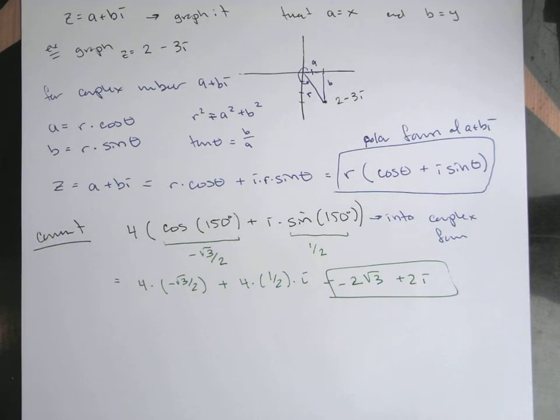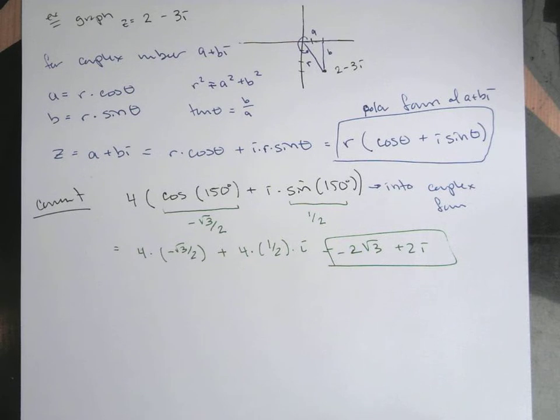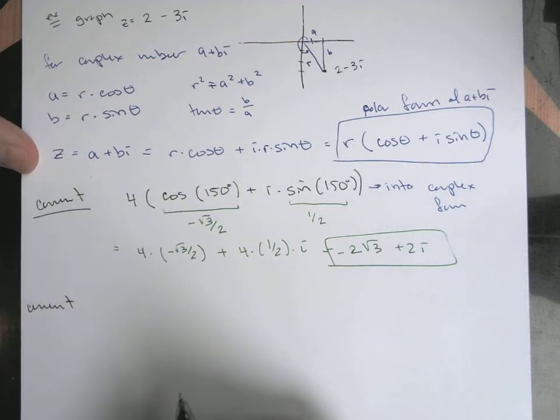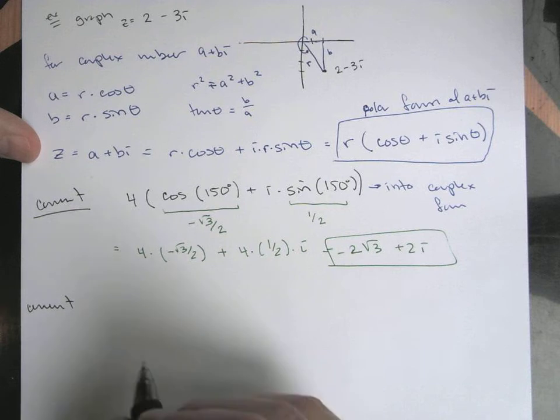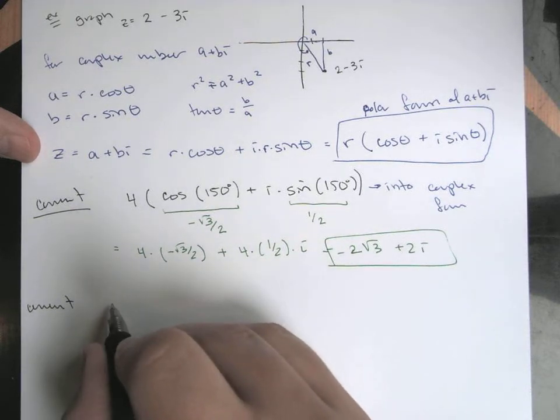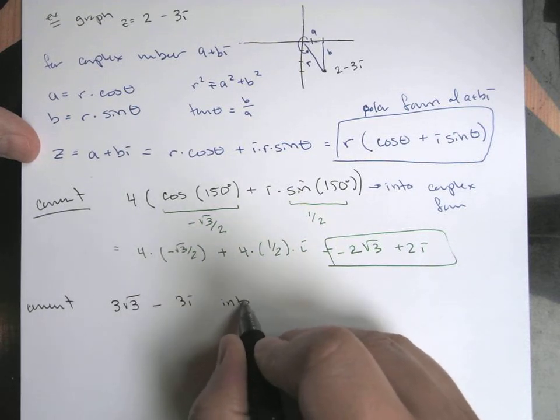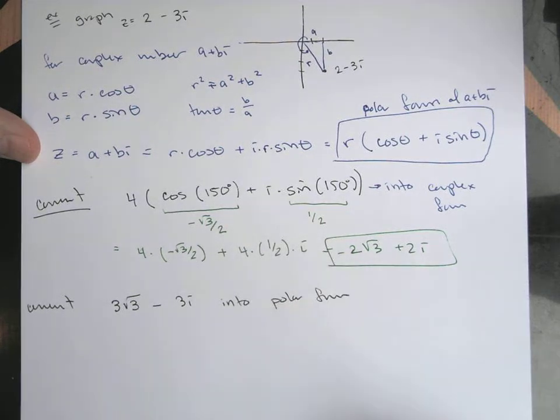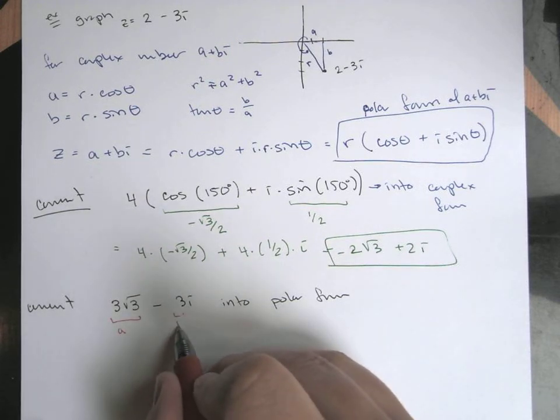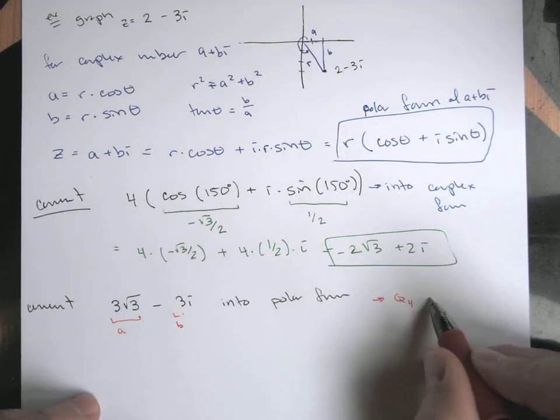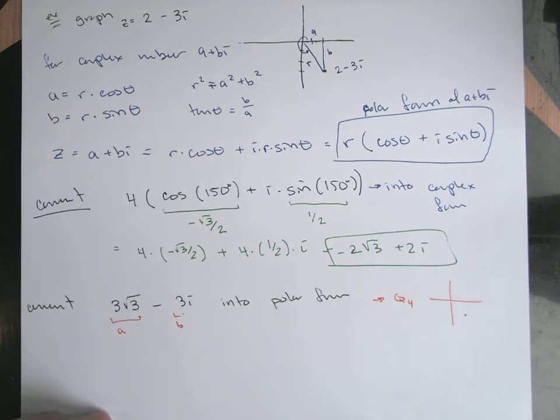If I wanted to convert something the other way, so given a particular complex number, if I wanted to sort of turn it into its polar version, the polar form. So let's convert, what should we do? How about let's convert 3 root 3 minus 3i into polar form. So the a is this 3 root 3, my b value is just kind of regular 3. What quadrant is this? a is positive, b is negative. This would be quad 4. If we graphed it, sort of over and down. I'm not going to actually try to graph it, because 3 times root 3 is a decimal value. That's sort of more awkward.